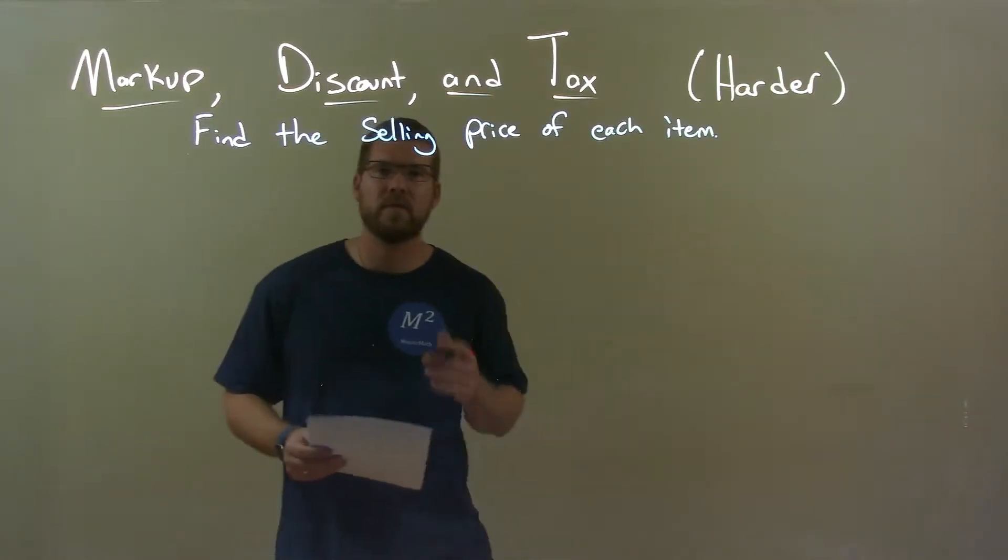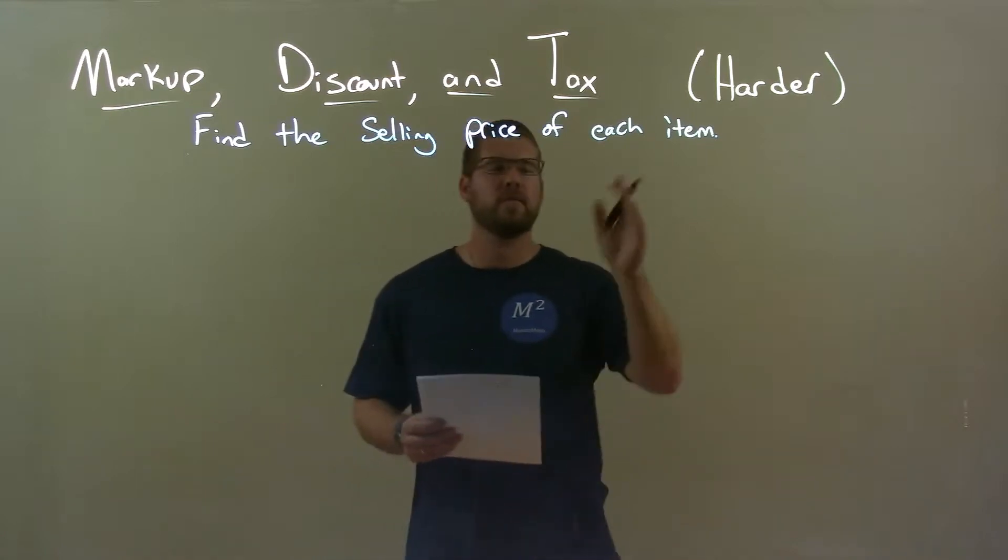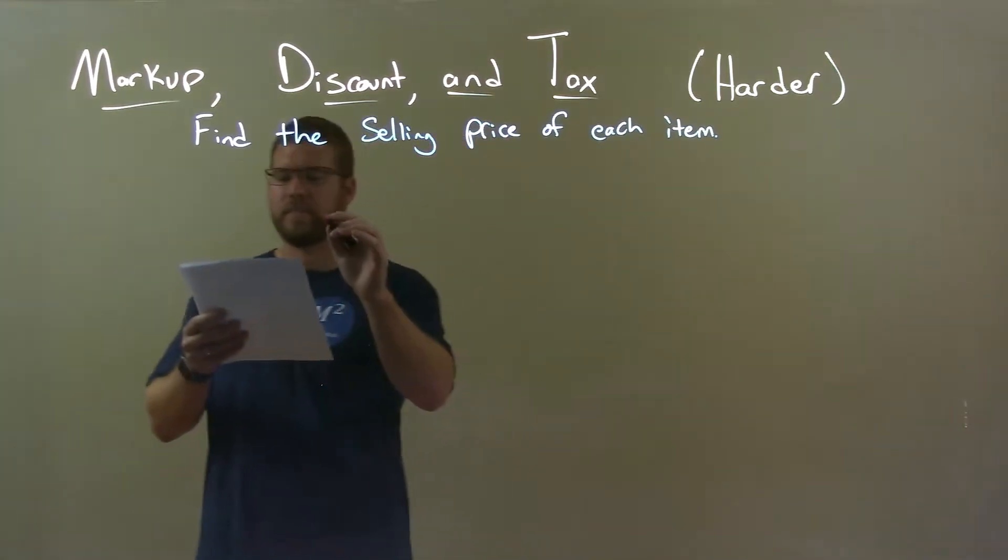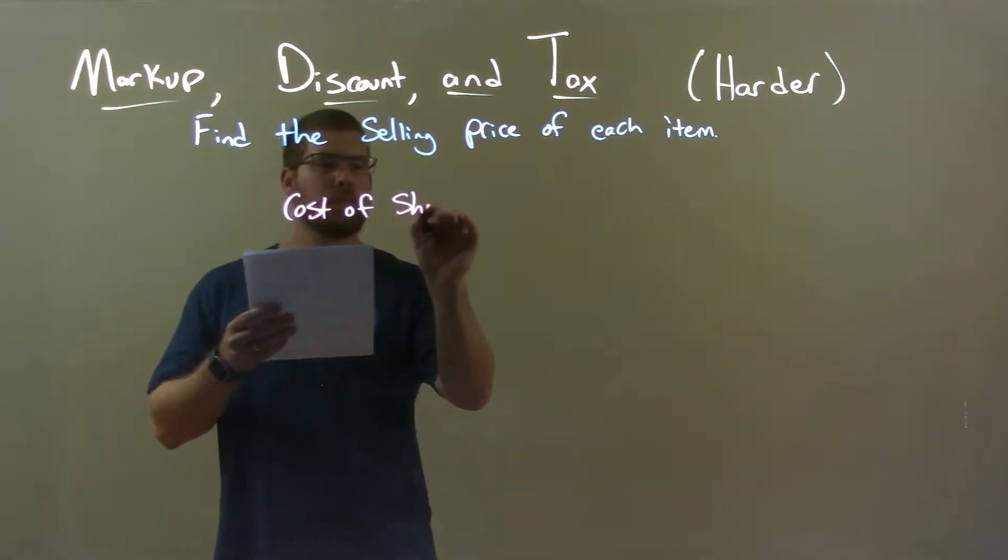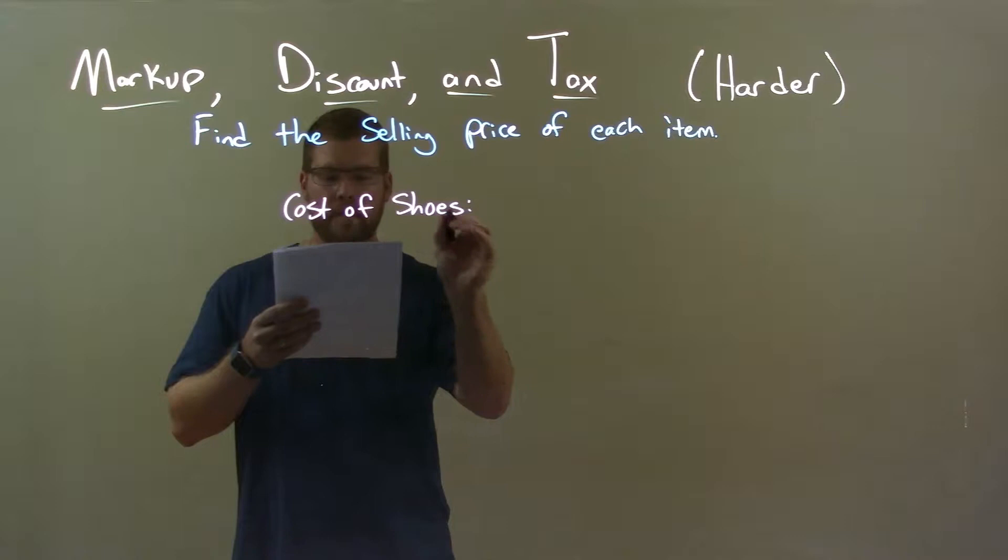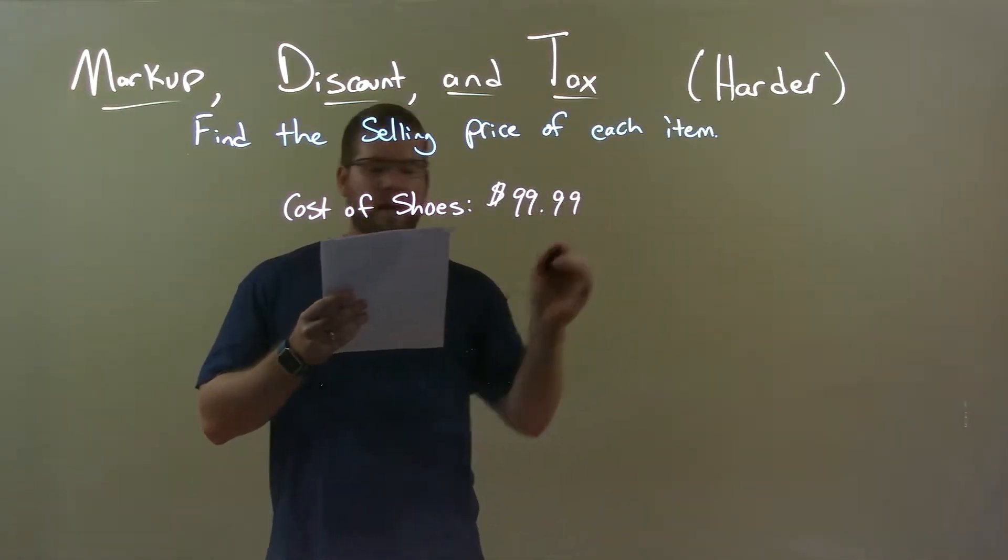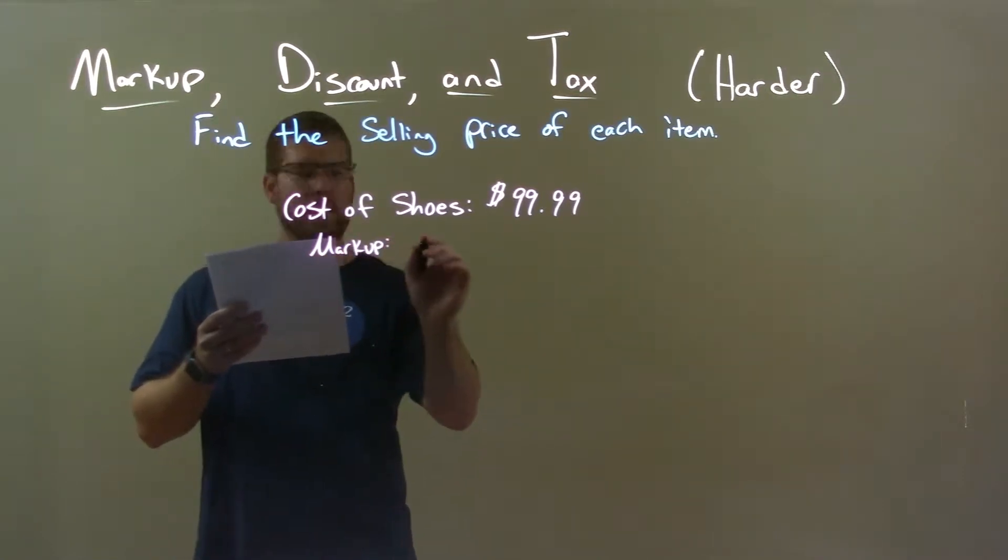I'm Sean and this is MinuteMath. Today we're learning about markup, discount, and tax—finding the selling price of each item. For this example, the cost of shoes is $99.99 and the markup is 9%.